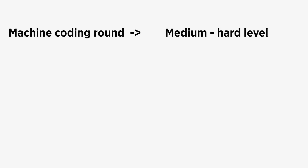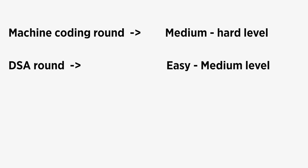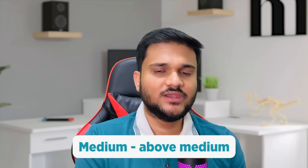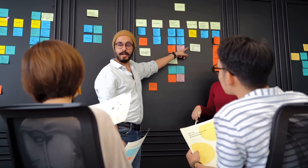Overall, looking at the interview process: the first round — machine coding — I would rate as medium-hard; the DSA round was easy-medium; the high level design round was medium; and the hiring manager round was also medium. So overall, the interview process was kind of medium to above-medium, because apart from DSA, there was nothing that was very straightforward or easy to get through. I believe Flipkart and their engineers have done a great job in structuring their whole interview process according to the actual needs of a software engineer — kudos for that.